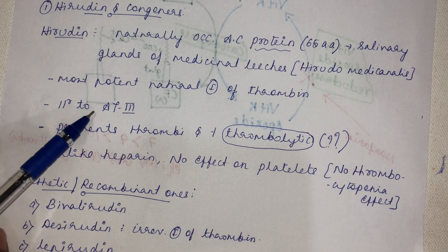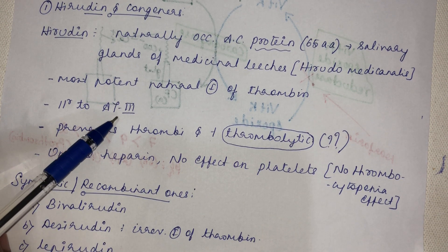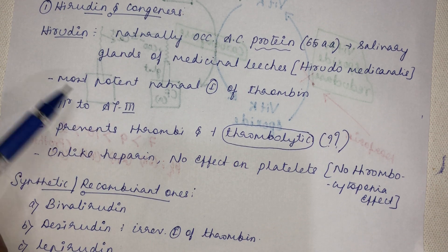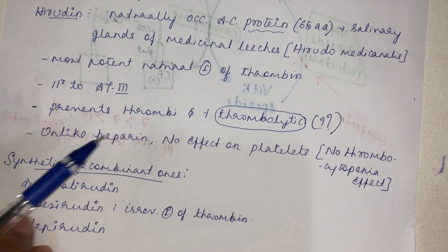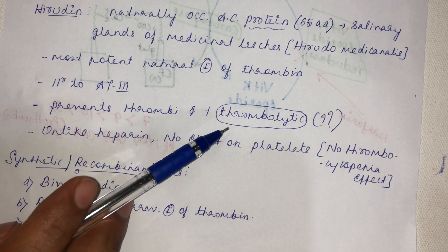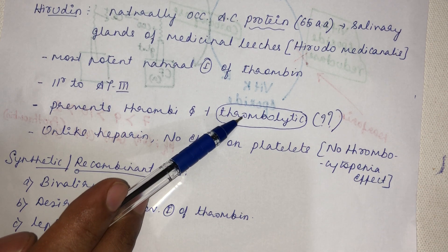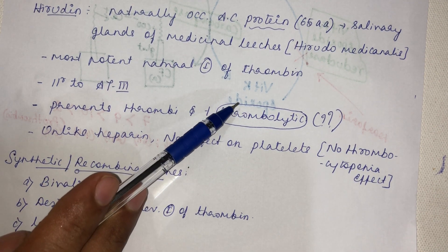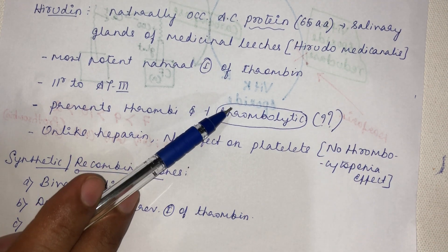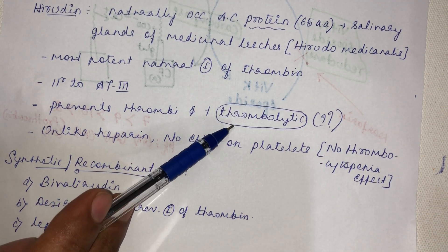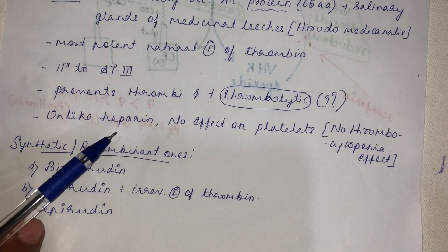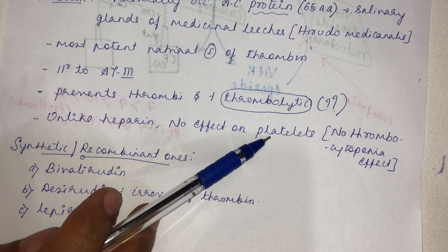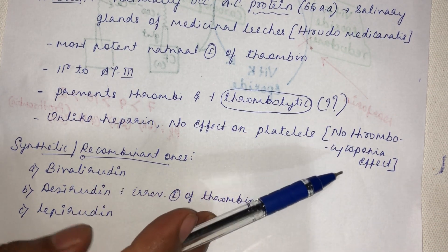Hirudin is structurally similar to antithrombin-3 in its activity — it directly cleaves thrombin and prevents thrombus formation. An added advantage is its thrombolytic (fibrinolytic) action: it cleaves fibrin, mimicking the action of plasmin. Unlike heparin, hirudin does not affect platelets, so it does not cause thrombocytopenia.